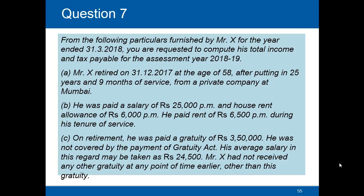Mr. X retired on 31st December 2017 at the age of 58 after putting in 25 years and 9 months of service from a private company at Mumbai. He was paid a salary of rupees 25,000 per month and a house rent allowance of rupees 6,000 per month. He paid rent of rupees 6,500 per month during his tenure of service. On retirement he was paid a gratuity of rupees 3,50,000 and he was not covered by the Payment of Gratuity Act. His average salary in this regard may be taken as rupees 24,500.